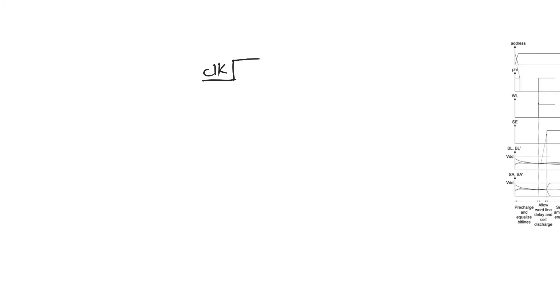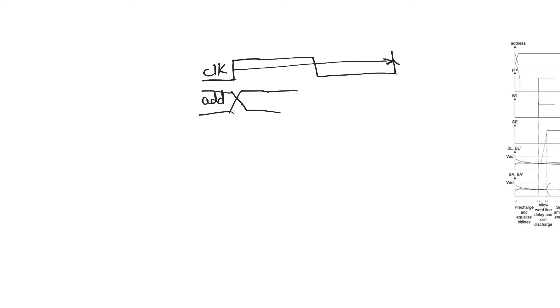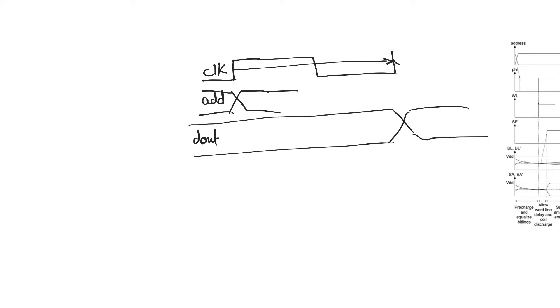What I want to talk about is the sequence of operations that happen when you read, because this leads us to a specific topic: self-timing in memory reading operations. Whether your memory is synchronous or asynchronous, you give yourself a clock signal, change the address to read from a new location, and after a specific amount of time — defined by the maximum operating frequency — you can expect the dout bus to have correct data.